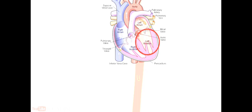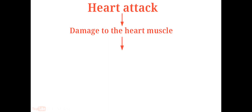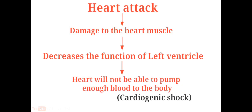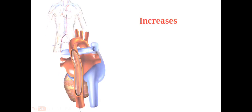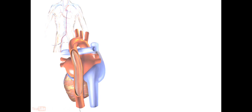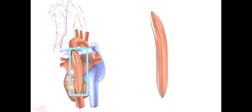The most common cause of cardiogenic shock is damage to the heart muscle from a severe heart attack. The IABP is a mechanical device that increases myocardial oxygen perfusion and indirectly increases cardiac output through afterload reduction. It consists of a cylindrical polythene balloon that sits in the aorta, approximately 2 cm from the left subclavian artery, and helps your heart pump more blood.